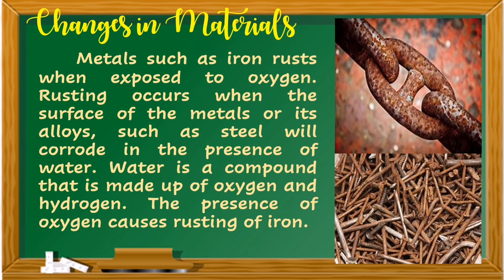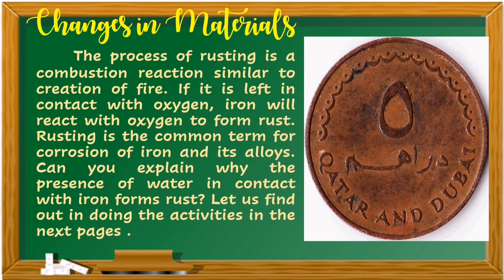Metals such as iron rust when exposed to oxygen. Rusting occurs when the surface of metals or their alloys, such as steel, corrode in the presence of water. Water is a compound made up of oxygen and hydrogen. The presence of oxygen causes rusting of iron. The process of rusting is a combustion reaction similar to the creation of fire. If iron is left in contact with oxygen, it will react to form rust. Rusting is the common term for corrosion of iron and its alloys.